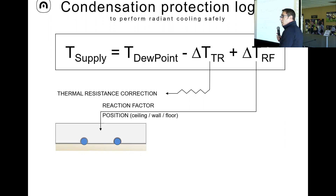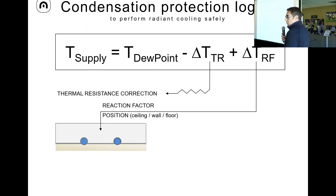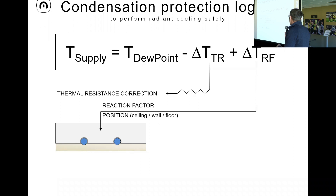The safety factor is based on thermal mass. On the floor, you could drive the temperature very close to the dew point, but if you need to brake it would take too much time — the reaction factor of the floor is much higher. That's why the floor is not a good candidate for effective radiant cooling. There are also comfort reasons: you don't want the floor too cold, as it may be uncomfortable, especially if sitting for a long time. Radiant cooling on the ceiling is much more effective.